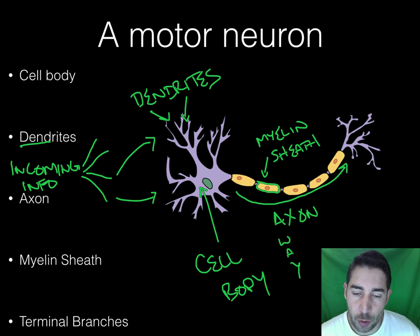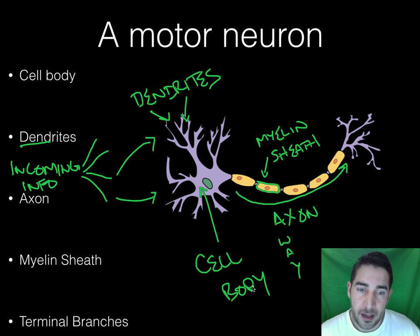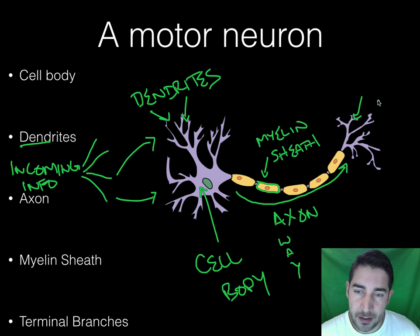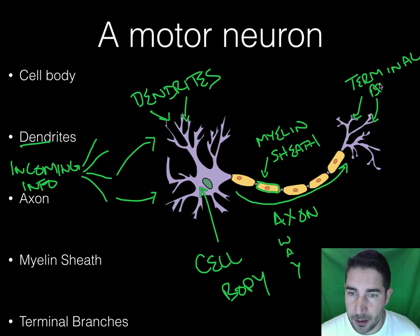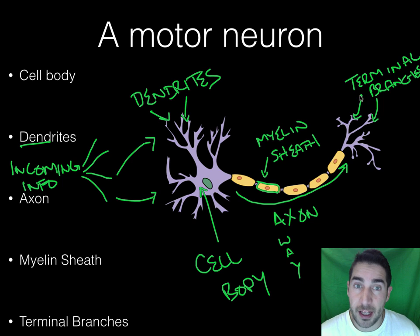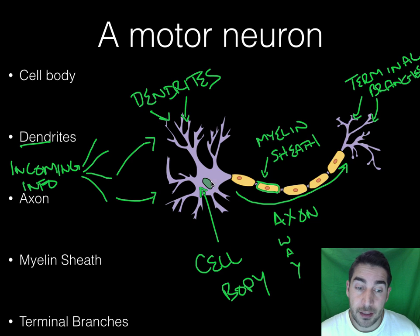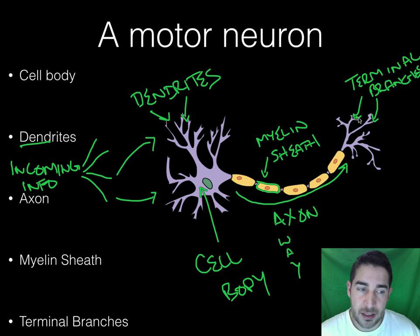The myelin sheaths are made up of Schwann cells — another type of glial cell the body uses. And finally, these little endings here are called terminal branches, sometimes referred to as terminal buttons. Terminal just means the ending point — like a train terminal, that's where the train stops. So: dendrites receive the information, it's processed by the cell body, sent down the axon, speed-boosted by myelin sheaths, and arrives at the terminal branches — then the process repeats. This happens multiple times per second, very, very quickly.